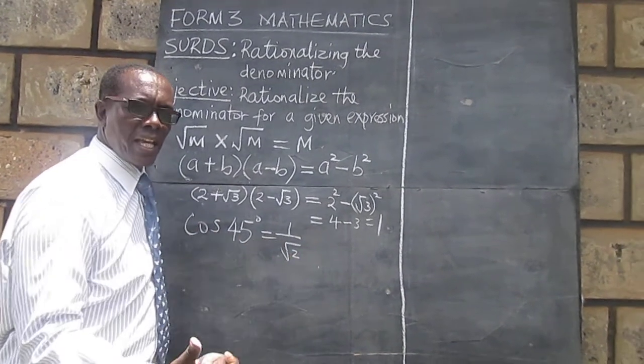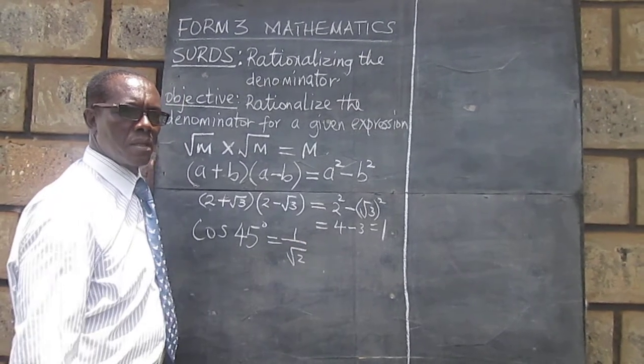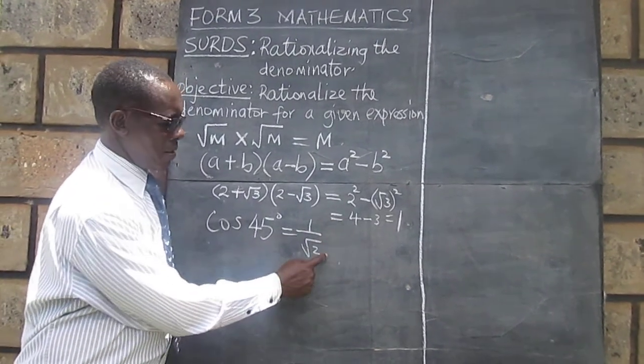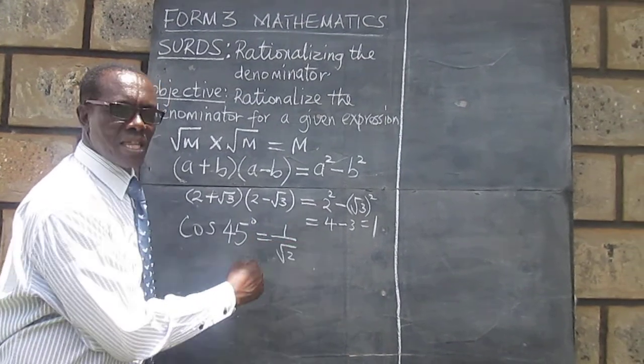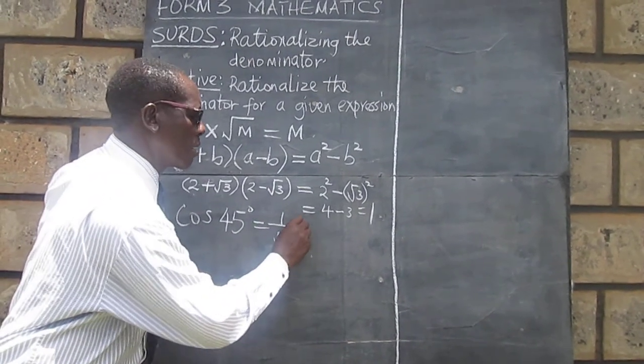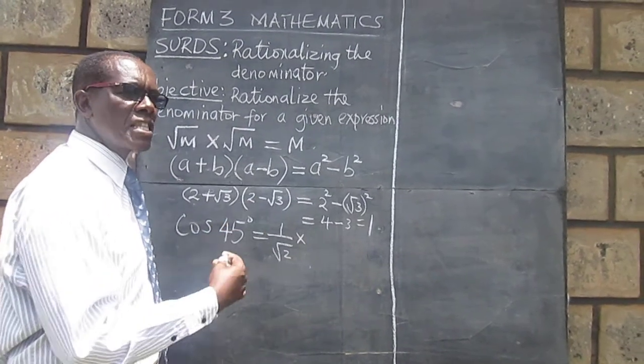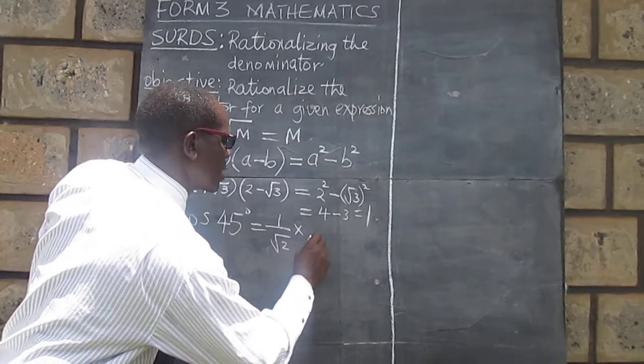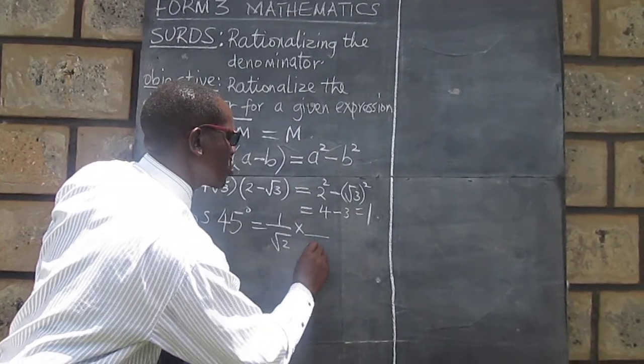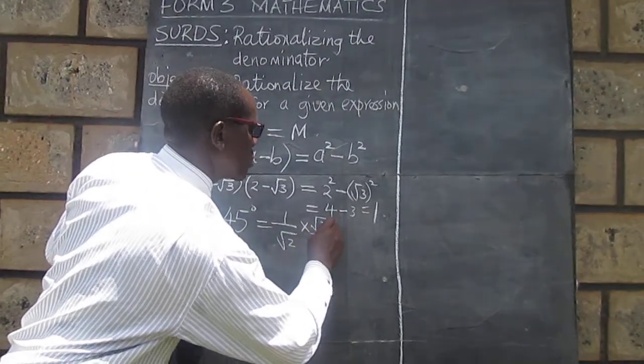Now we are saying we can multiply this, the root 2, by another root 2. And because we don't want to change the given expression, we must make sure what we multiply by retains the original expression. So we will multiply the denominator by root 2 and the numerator by root 2.